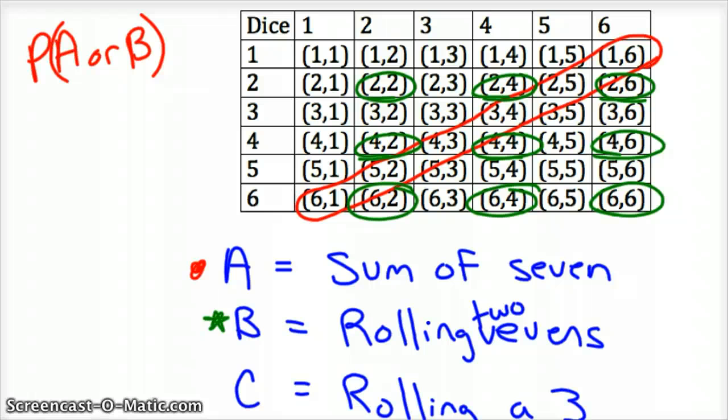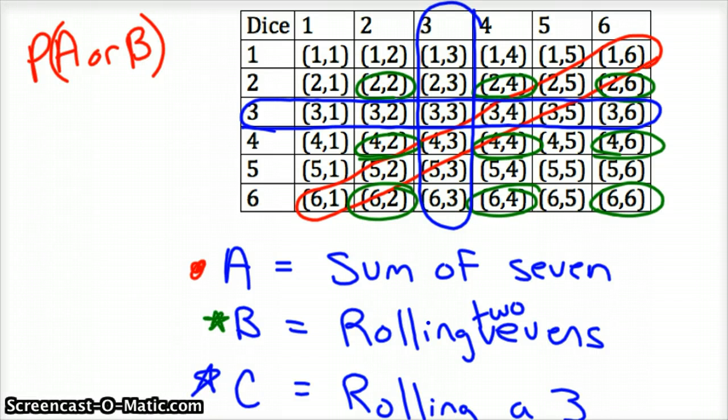Okay. So that's the evens. And then C is rolling a three. We'll do that one in blue. So rolling a three is everything in this row and everything in this row, everything in that column and everything in this row. And just be careful that you don't count the three, three twice. So we've only got one, two, three, four, five, six, seven, eight, nine, ten, eleven of those. So maybe I should keep track of that. There's eleven of those, nine here, and a sum of seven. You've got one, two, three, four, five, six of those. And there's 36 possible combinations.